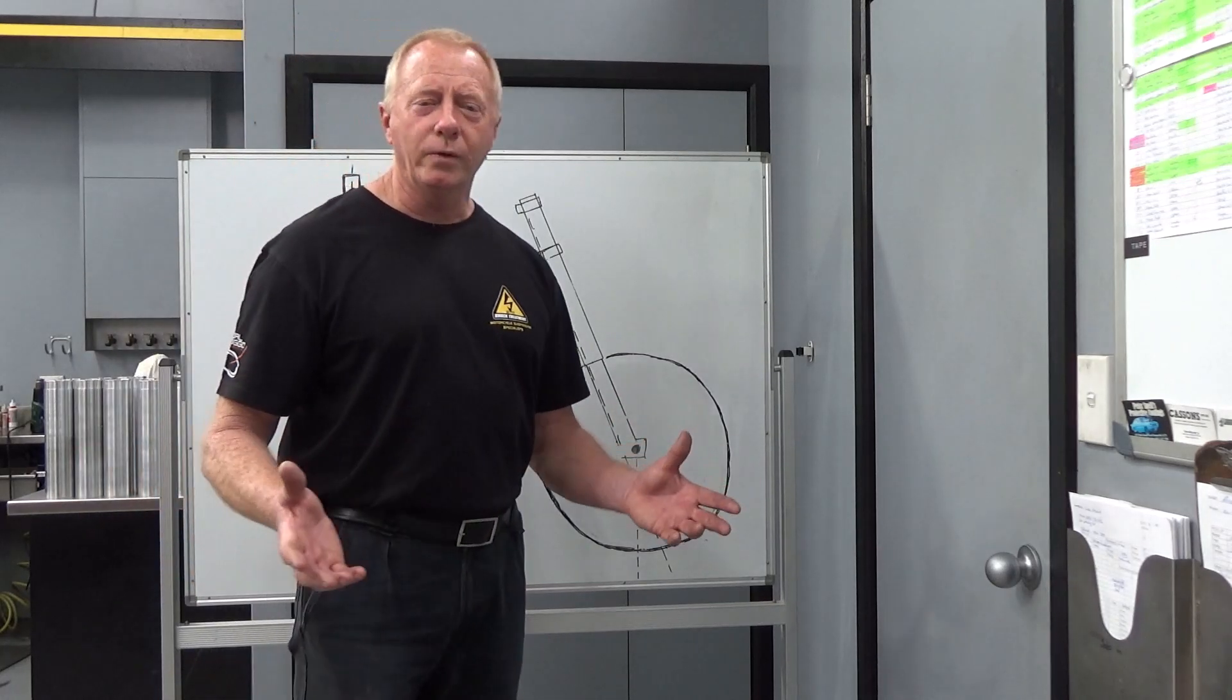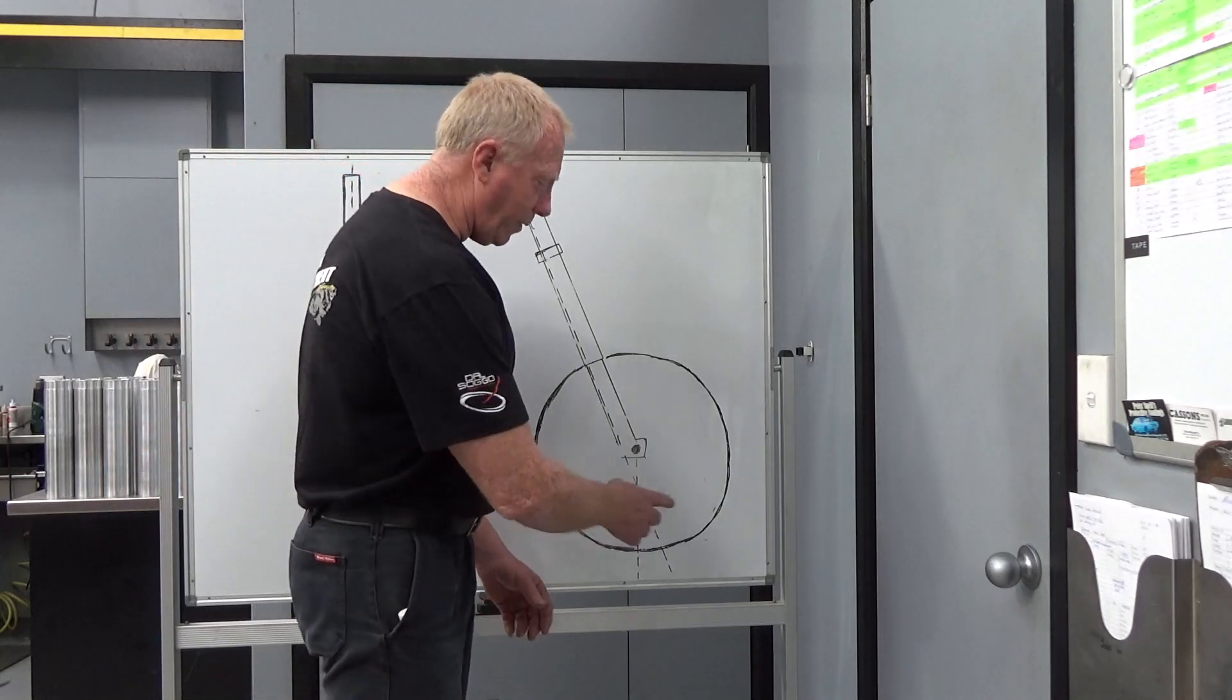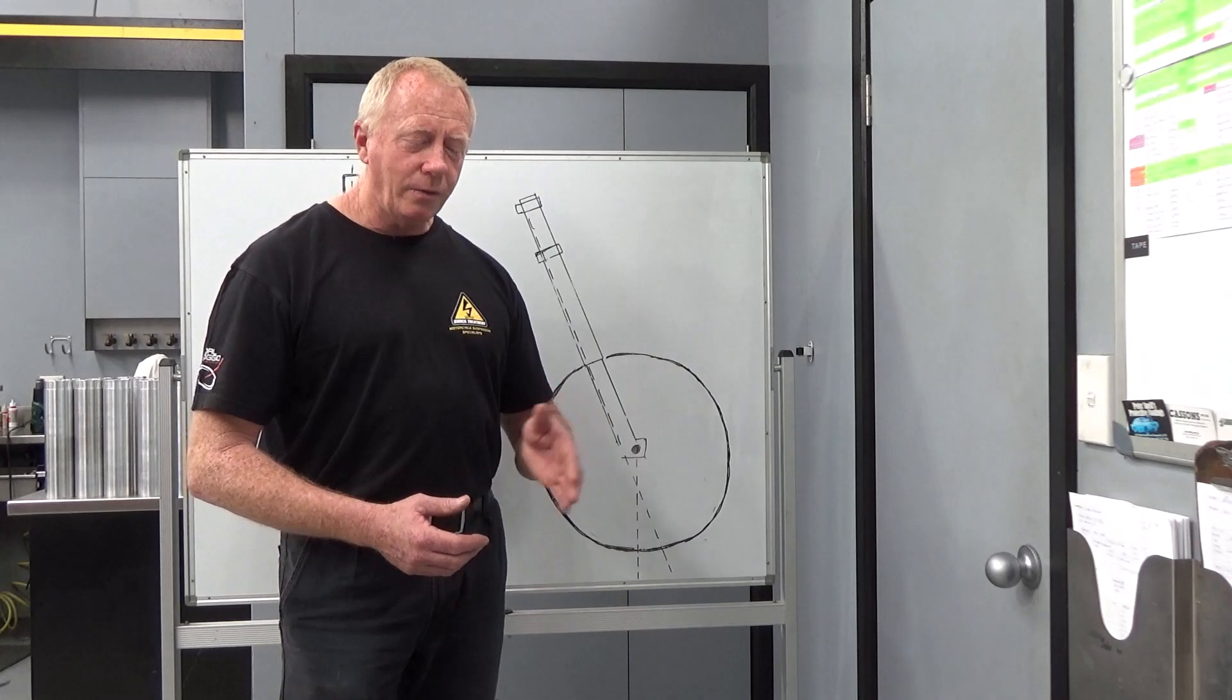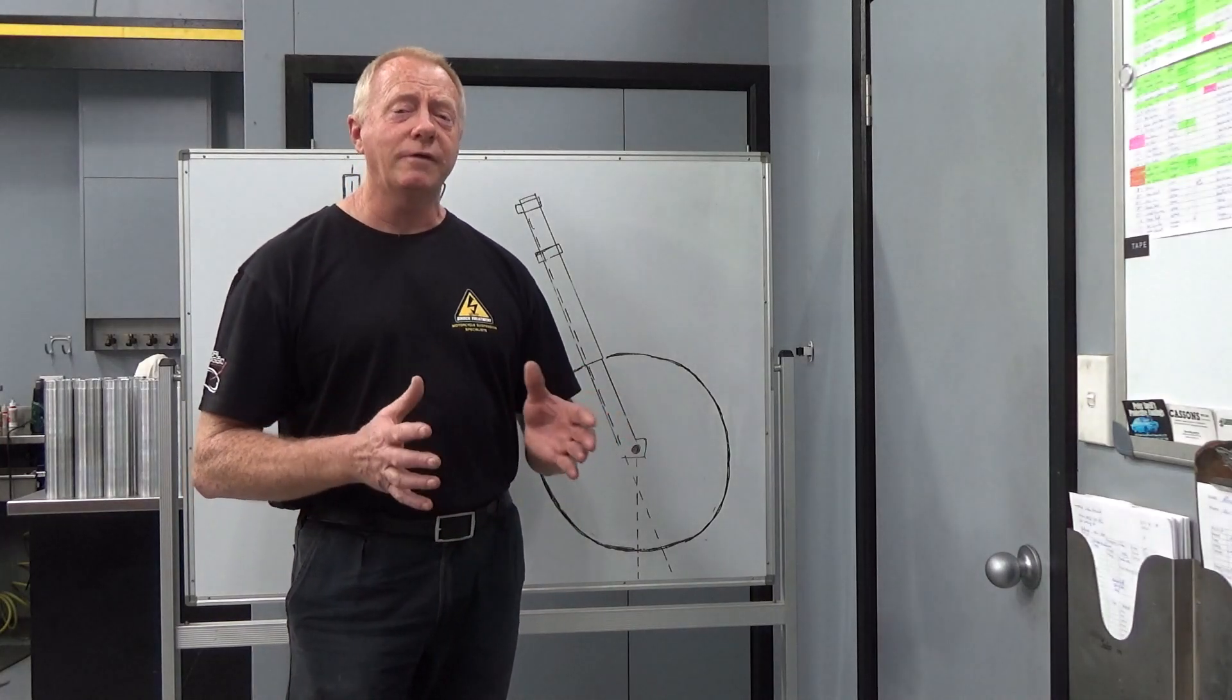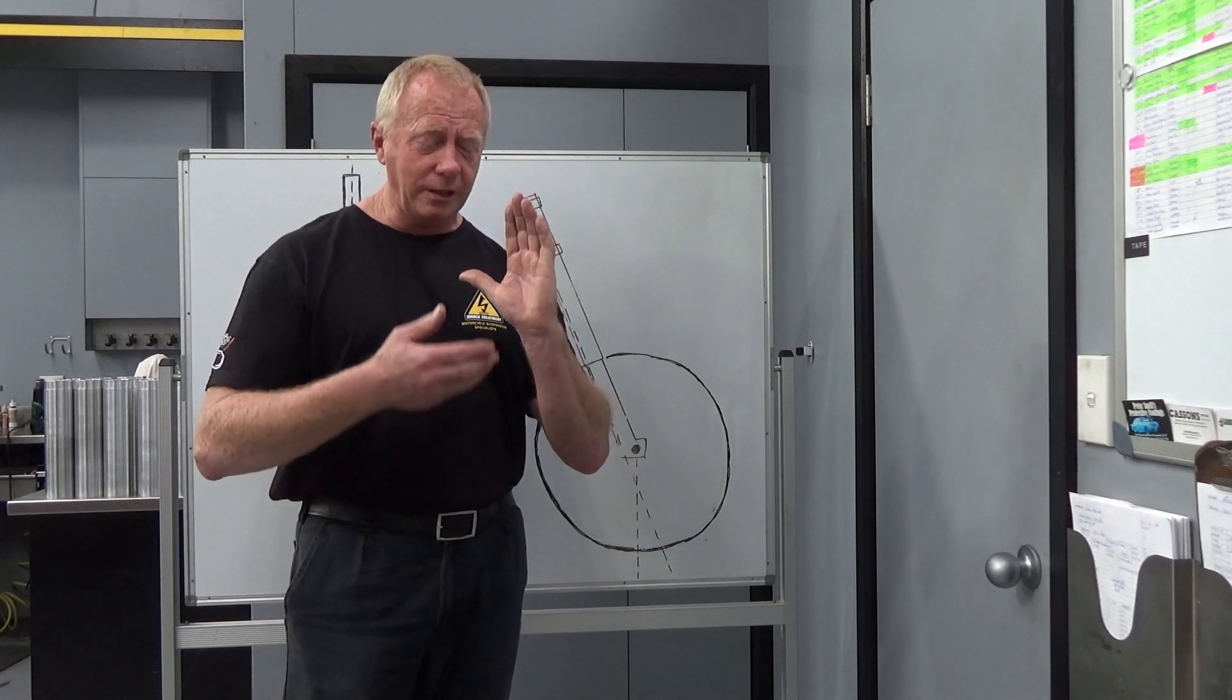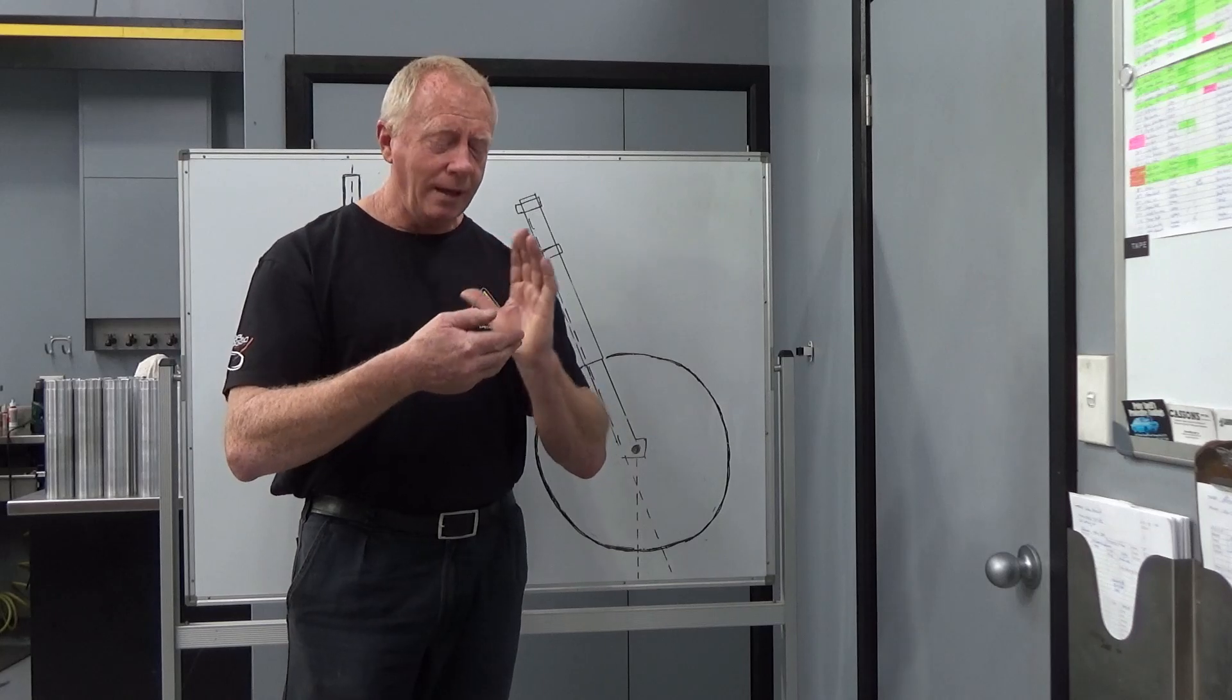Now there is what we call real trail as well, but we're not going to go into that at this point. And so the amount of trail that we've got will determine how much force is being generated. So with a small amount of trail, it's just like having a small rudder. As that rudder or the tyre turns in this particular case, we're generating a certain amount of force against that tyre.